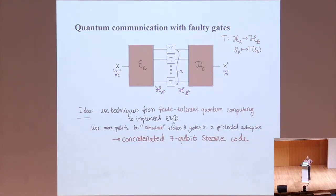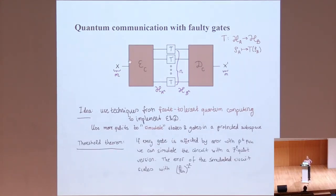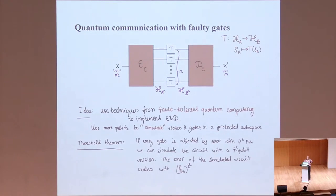Luckily, people in fault-tolerance have already done a lot of work on this kind of problem, where you can use the techniques from quantum error correcting codes and fault-tolerant computing to implement these circuits. You can use more qubits to protectively simulate your state that you want to prepare, and basically significantly reduce the probability of error happening in these circuits. Here we're going to use the seven-qubit Steane code. We're going to concatenate it, which encodes one qubit in seven qubits at each level.